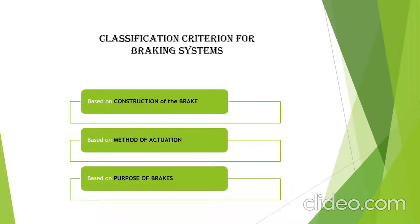Moving on to the classification of brakes. Braking systems can be classified on various grounds. We have considered three grounds for classification. Firstly, the construction of brakes, which includes disc brake and drum brake. Secondly, the method of actuation, which includes mechanical brakes, hydraulic brakes, air brakes, etc. And thirdly, the purpose of brakes, which generally includes two types: service brakes and parking brakes.